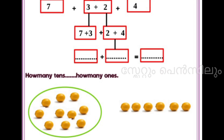How many tens and how many ones are there? This is tens, right? Tens is equal to 10. 1, 2, 3, 4, 5, 6, 7, 8, 9, 10. If you count up to 10, there are 10 lemons, okay? Then 10 is 1 ten, and 1, 2, 3, 4, 5, 6 — so you can write 1 ten and 6 ones.